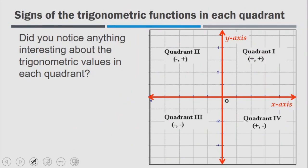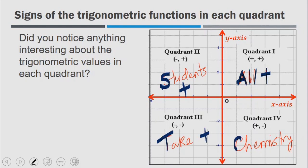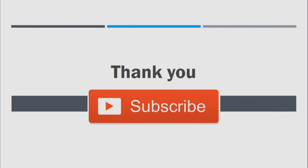To put it all together, remember the acronym: All Students Take Chemistry. In quadrant 1, all trig functions are positive. In quadrant 2, only sine is positive. In quadrant 3, only tangent is positive. In quadrant 4, only cosine is positive. Thank you so much — this is the end of the lesson. Please remember to subscribe.